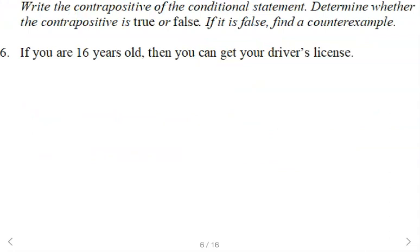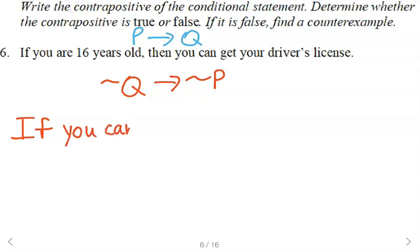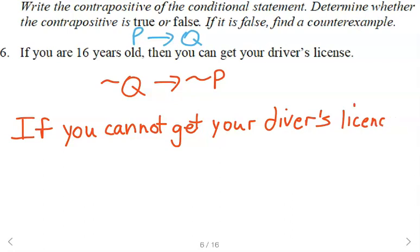Contrapositive. So for the conditional, if P then Q, the contrapositive will reverse and negate those. If not Q then not P. So we would say if you cannot get your driver's license, then you are not 16 years old.